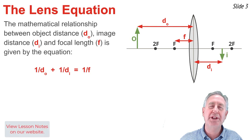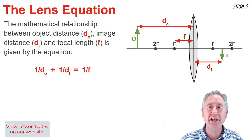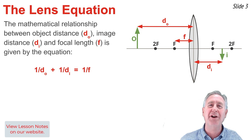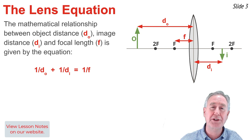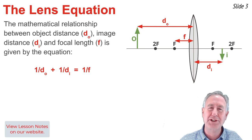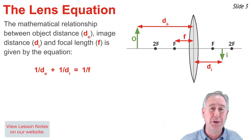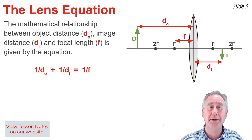The mathematical relationship between the object distance, image distance, and focal length is given by the lens equation shown here. In the equation, dO refers to the object distance — the distance measured from the object's location to the vertical axis of the lens. The image distance, dI, is measured from the image location to the vertical axis of the lens. And the focal length, f, is measured from the focal point to the vertical axis of the lens.